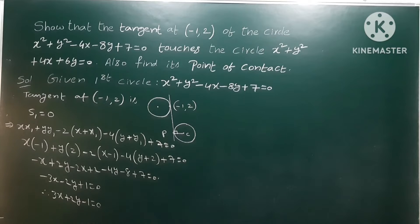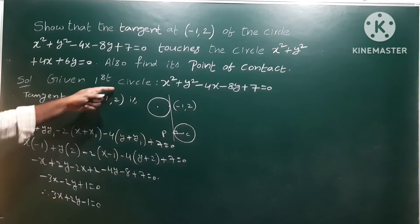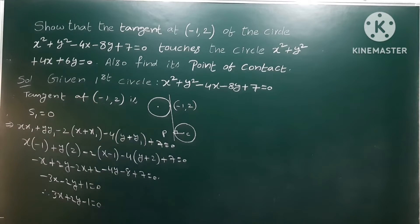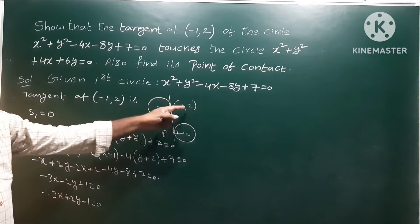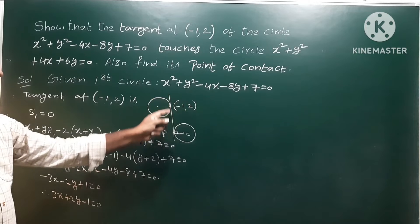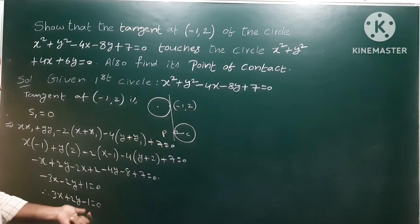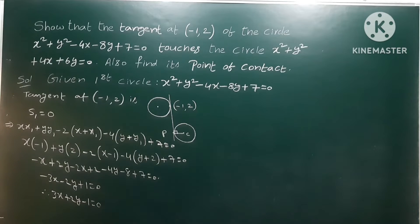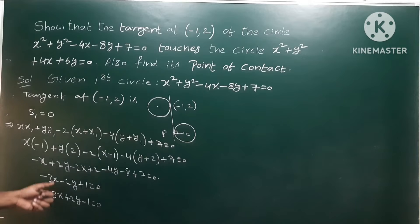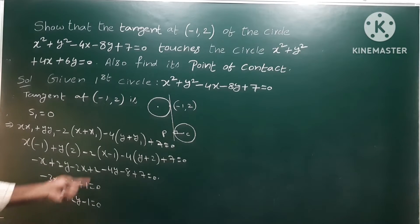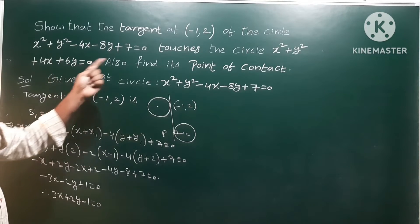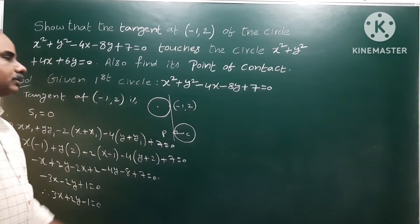So the equation simplifies to -3x - 2y + 1 = 0, or equivalently 3x + 2y - 1 = 0. This is the tangent to the first circle at the point (-1, 2). We now need to show that this tangent also touches the second circle.